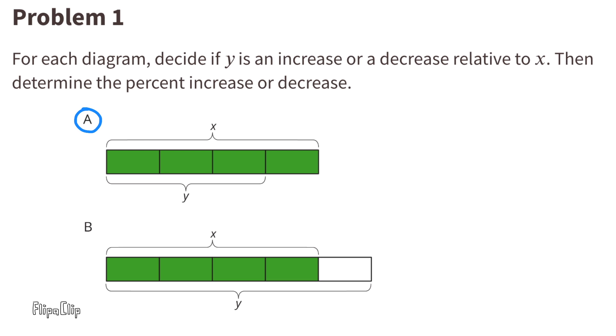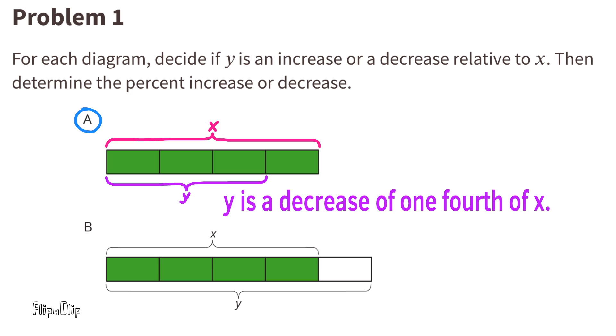A. The diagram shows that X is divided into 4 equal sections and Y is a total of 3 out of 4 of those sections. Y is a decrease of one-fourth of X. Since one-fourth is equal to 25%, Y is a 25% decrease of X.